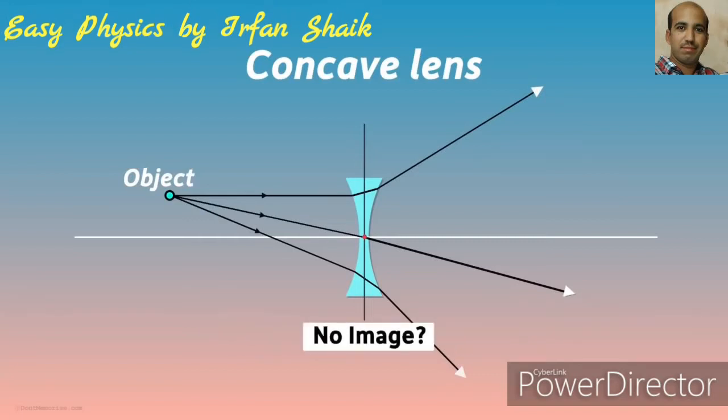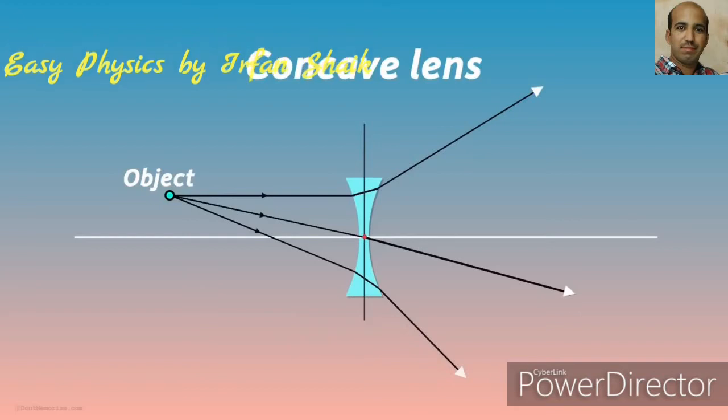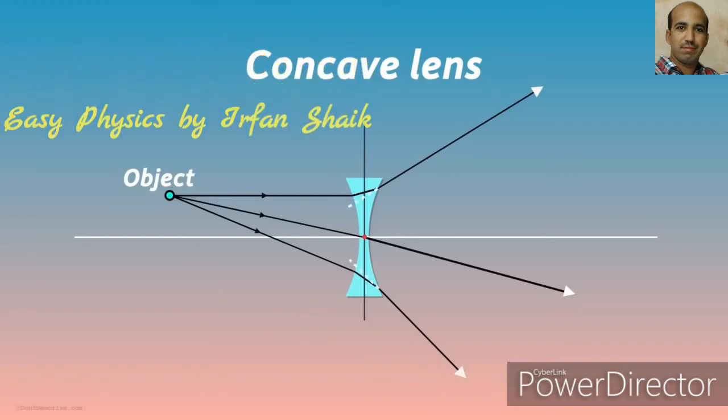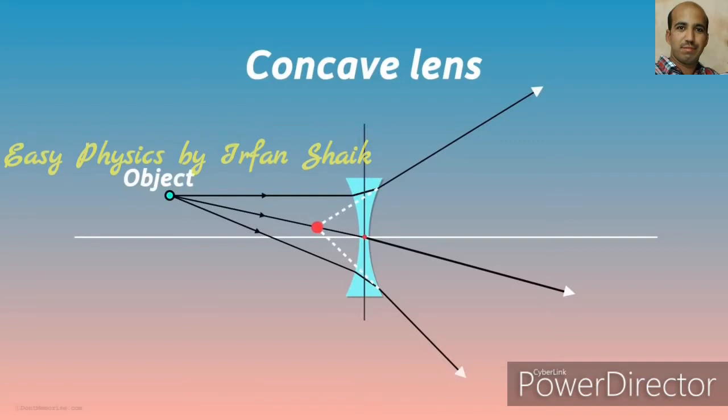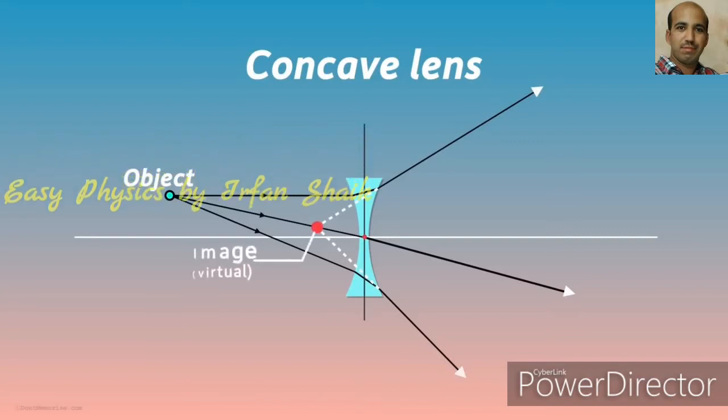That doesn't mean that no image is formed. If we extend all these rays backwards, they will meet at a point. A virtual image will form at this point.